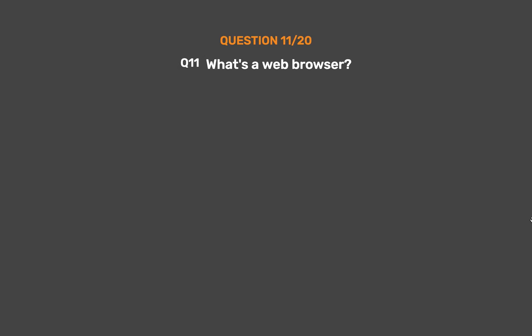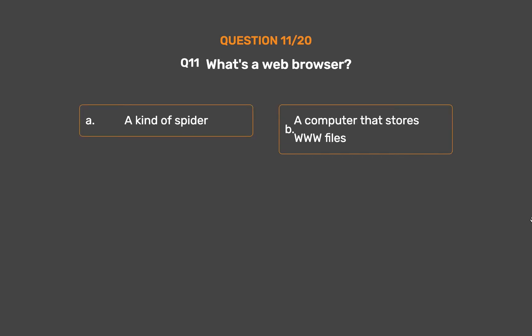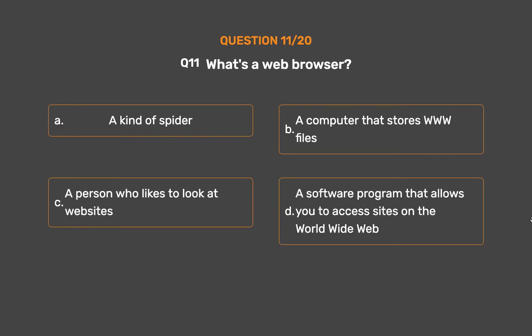Question number 11. What's a web browser? Option A: A kind of spider. Option B: A computer that stores WWW files. Option C: A person who likes to look at websites. Option D: A software program that allows you to access sites on the World Wide Web.